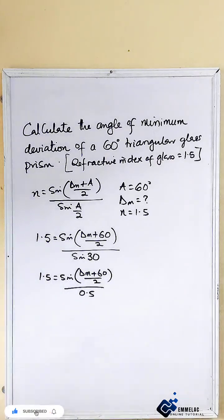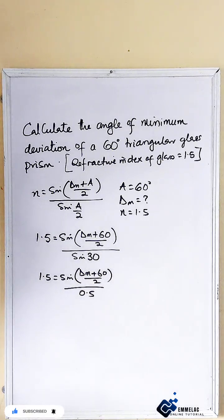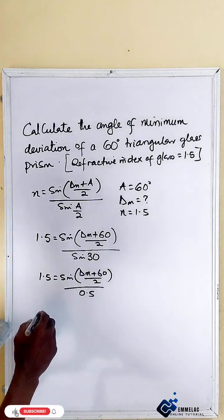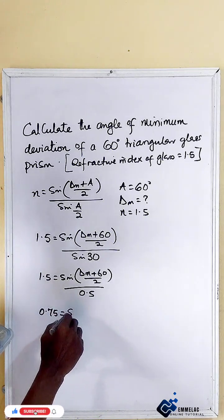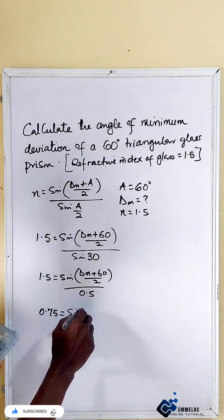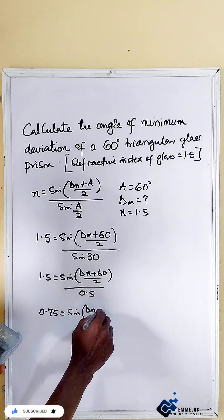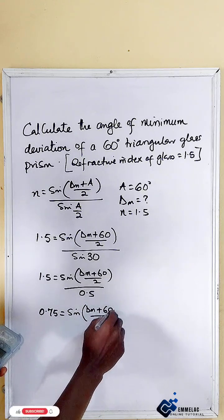1.5 times 0.5 — that is when we cross-multiply — gives us 0.75 equals sine of (dm plus 60) all over 2.